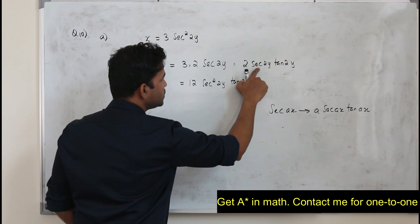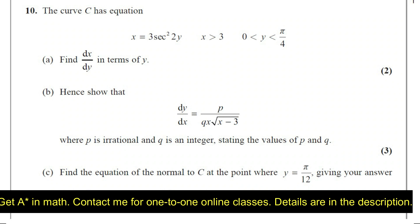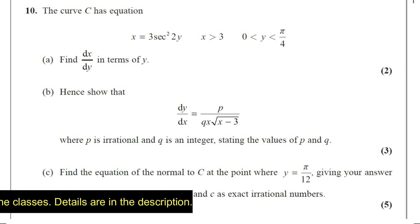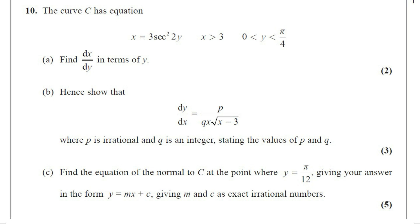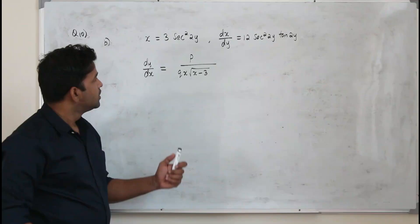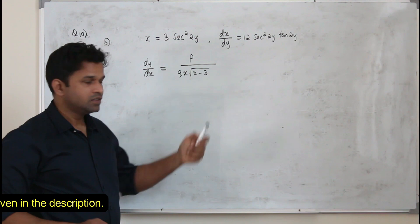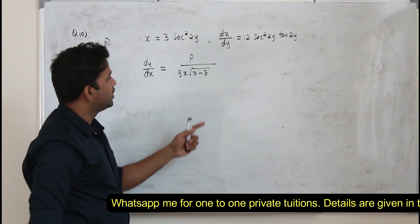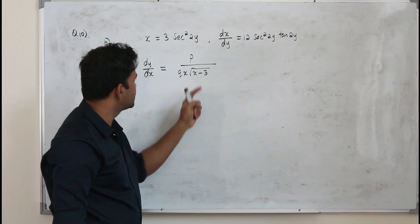That's our answer for dx upon dy. Part B shows that dy upon dx equals p over (q·x·√(x−3)), where p is irrational and q is an integer. This question is worth 3 marks. They want you to prove this form of dy/dx, but not in terms of y — they want it in terms of x. So we need to convert everything in terms of x using the original equation.